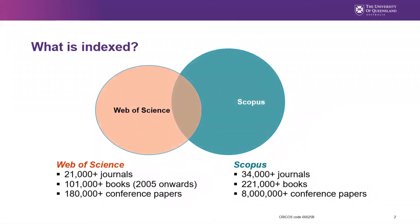Web of Science and Scopus are the two citation databases we recommend you use to locate your track record metrics for your publications. These databases index research publications and track citations between indexed publications. There is some overlap between the two databases, but there is also discrete content in each database.